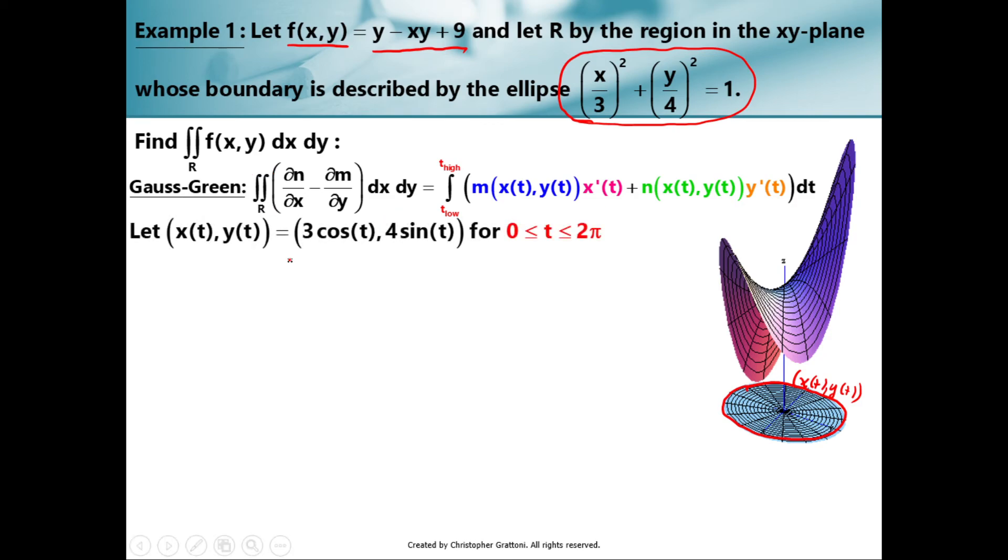All right, so let's try crunching the numbers on a concrete example here. At the beginning, this looks very similar to a problem that we would have done on one of our previous videos. We have a surface, f(x, y) is equal to, in this case, y - xy + 9. So this is some surface living in three-dimensional space. And I want to compute the double integral of f(x, y) over the region described by this ellipse. Now in this case, my surface is above the xy plane over this entire region. So this is actually going to be a volume calculation. It's going to be the volume trapped between this surface, f(x, y), and our elliptical region on the xy plane.